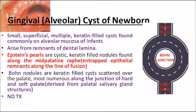Next is the gingival cyst of newborn, also called alveolar cyst of the newborn. It is seen in newborn children. It is a small, superficial, multiple keratin-filled cyst found commonly in the alveolar mucosa of infants. In the clinical picture you can see small yellowish color swellings in the alveolar mucosa of the newborn. The cause is mainly remnants of the dental lamina.